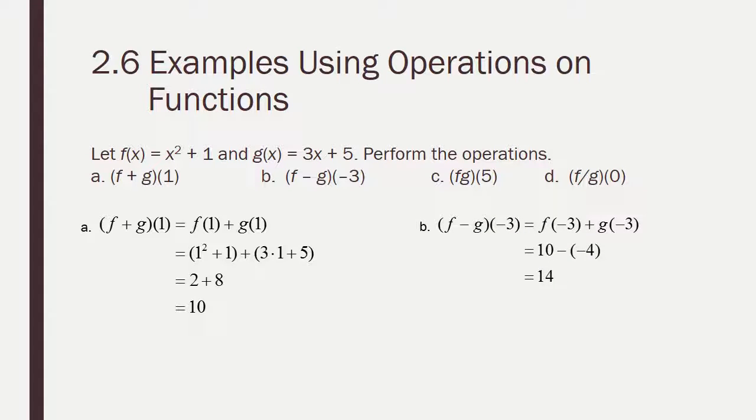For b, we put negative 3 in f, and we get 10. We put negative 3 in g, and we get negative 4, and then we subtract. 10 minus negative 4 is 14.